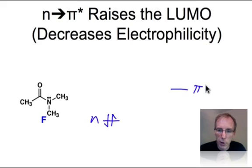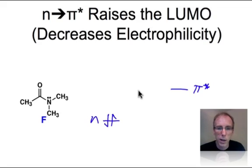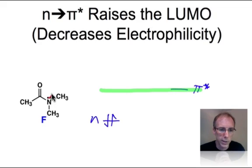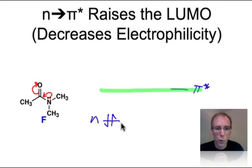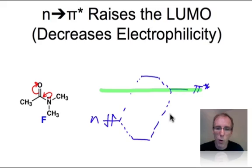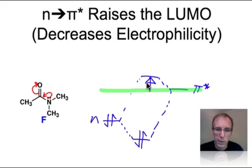The frontier orbitals involved are the non-bonding pair of electrons — that's a filled level — and then we have the π* level, which is the lowest unoccupied molecular orbital. This is the picture before resonance. If we could somehow keep resonance from taking place, we'd have a LUMO represented by that green line. When we turn on resonance, we donate that pair of electrons on nitrogen into π*. This filled-empty frontier orbital interaction causes the lowering of our filled level and a raising of our empty level. As a consequence of resonance, we've increased the LUMO level, making the π* higher in energy and making it a poorer electrophile.